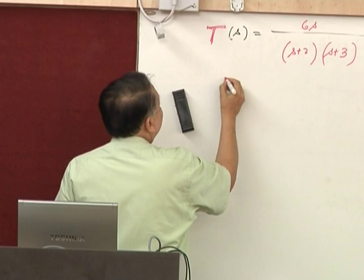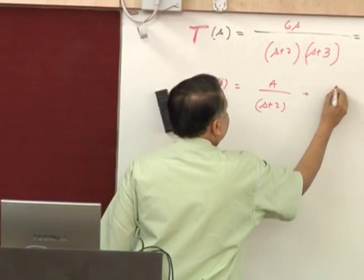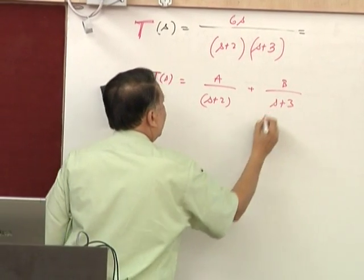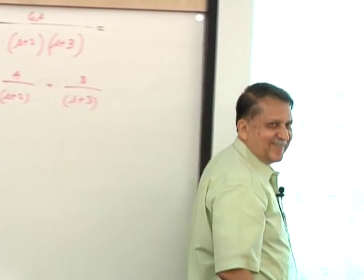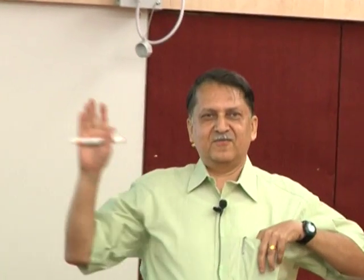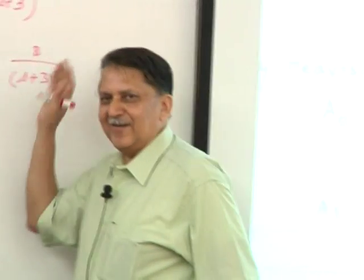There are two ways again of doing it. The first way is very simple. T of s is s plus 2. If the order of the denominator is more than the order of the numerator, there is nothing special in the numerator — a, b, c, d, etcetera. So this is easy.